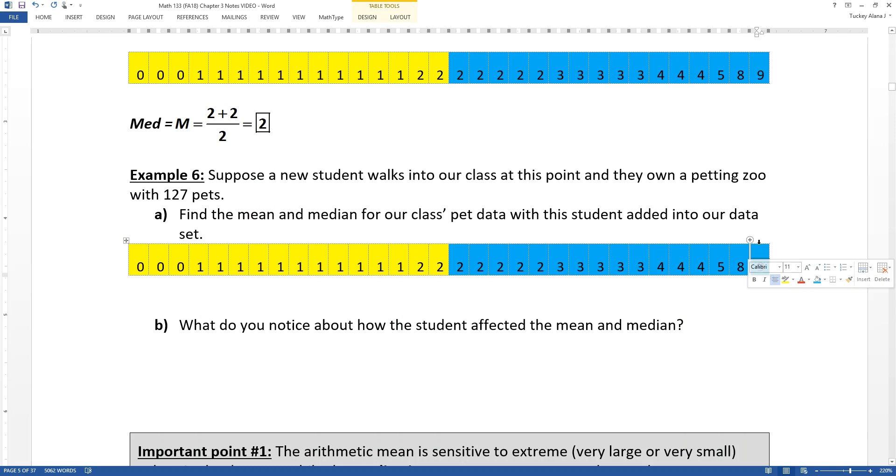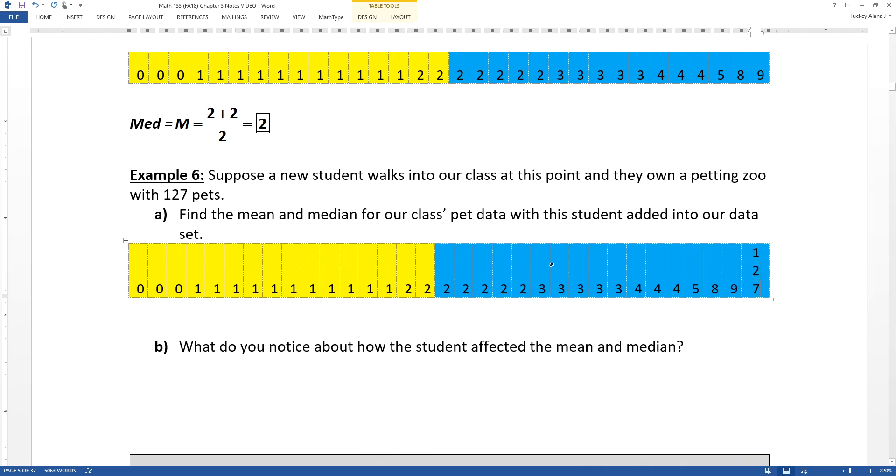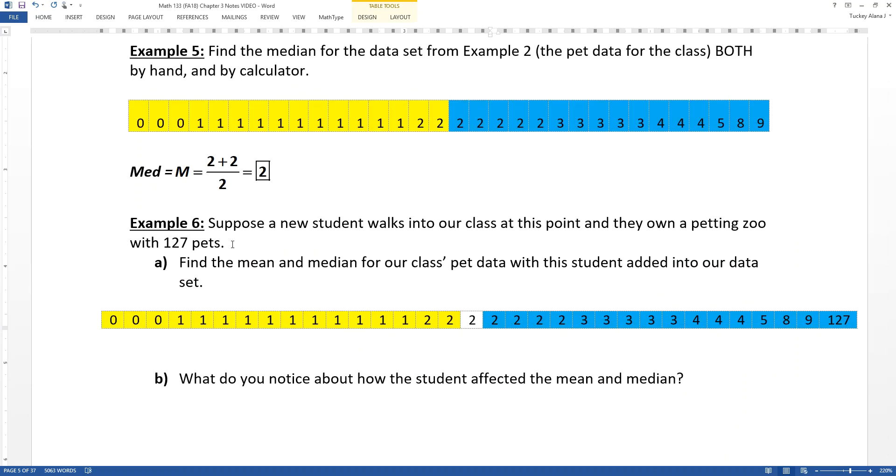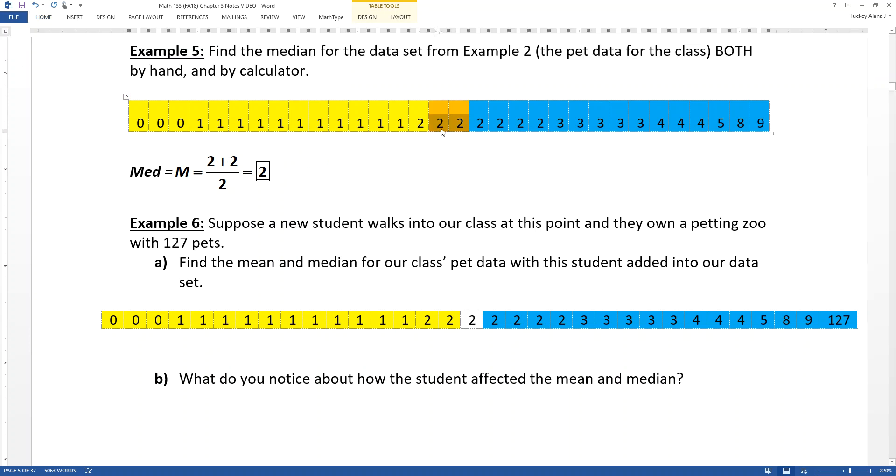So what would happen? So we're going to add a student over here. Insert column to the right. And they're going to be at 127. So now, looking at it, in the one above, the median was the halfway spot between two and two, right? So we took these two. There were 16 below, 16 above, and then we averaged out the two orange ones, and sure enough, that's what we got.